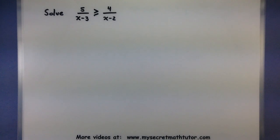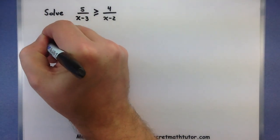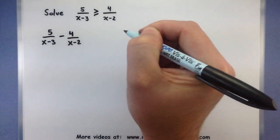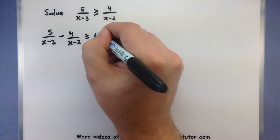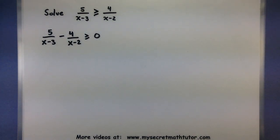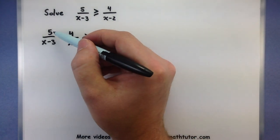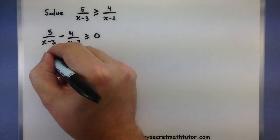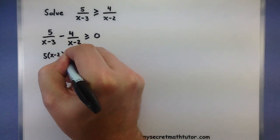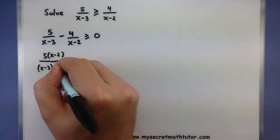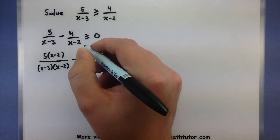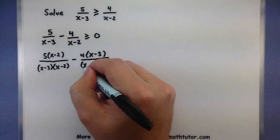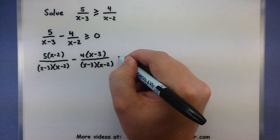Let's start off by getting everything onto one side: 5/(x minus 3) minus 4/(x minus 2) is greater than or equal to 0. Like before, we need a common denominator. Multiply the first rational on top and bottom by (x minus 2), and the second on top and bottom by (x minus 3). That gives us 5(x minus 2) over (x minus 3)(x minus 2), minus 4(x minus 3) over (x minus 3)(x minus 2) — both denominators are exactly the same.